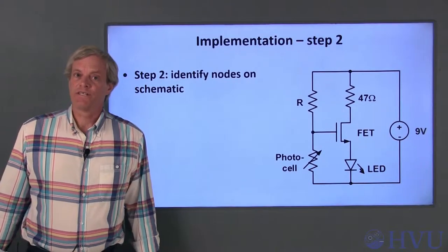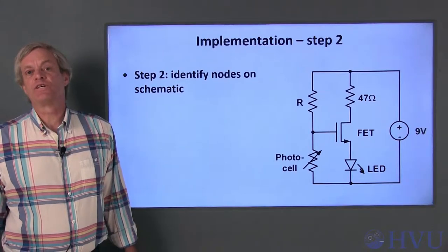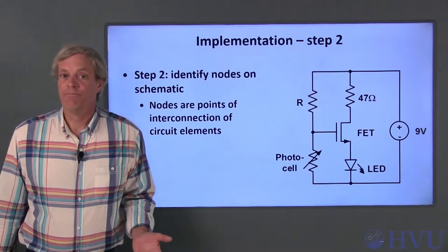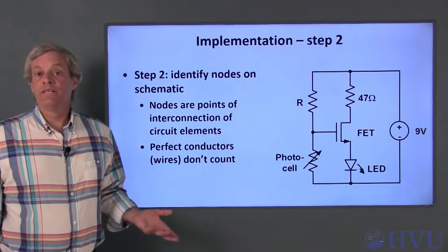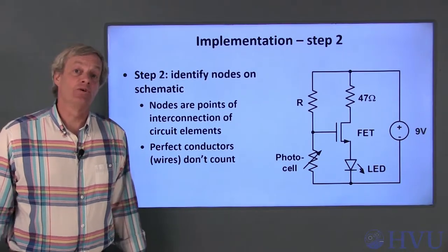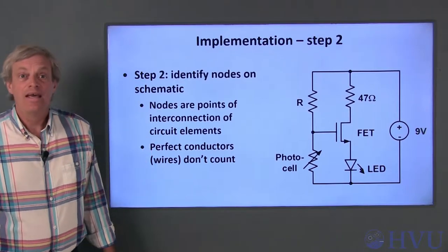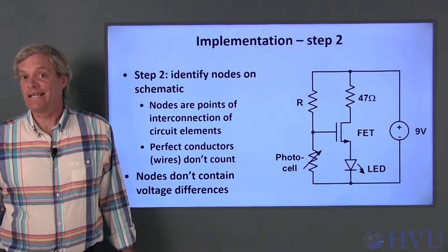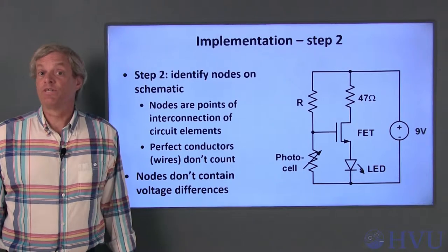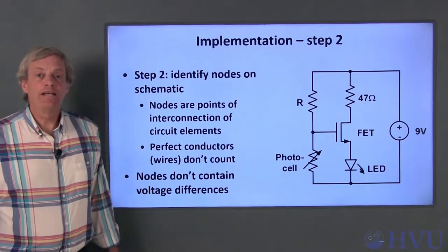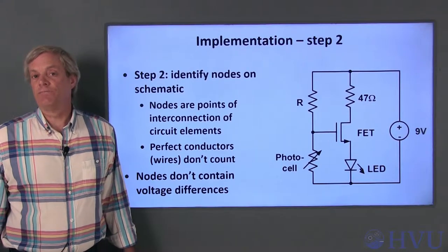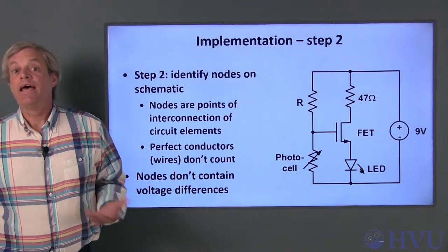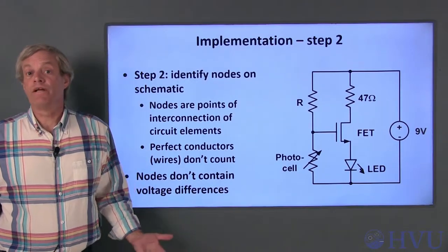The next step in converting a schematic to a physical circuit is to identify the circuit nodes on the schematic. Nodes are simply points on the schematic where two or more elements are interconnected. Wires or perfect conductors don't really count as circuit elements since they don't introduce voltage differences into the circuit. In more official terms, a node has a single unique voltage — there are no voltage differences inside a node. Since perfect conductors don't introduce voltage differences, we can put them inside nodes. Identifying nodes is a fundamental step in being able to assemble a circuit from a schematic — we identify nodes in the schematic and then on the breadboard, and connect the components to the corresponding nodes.